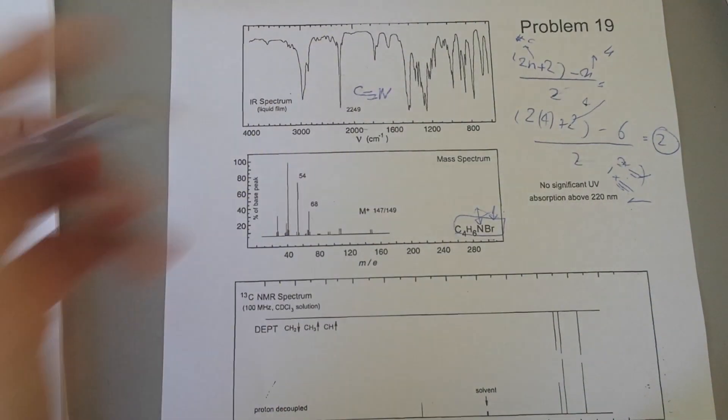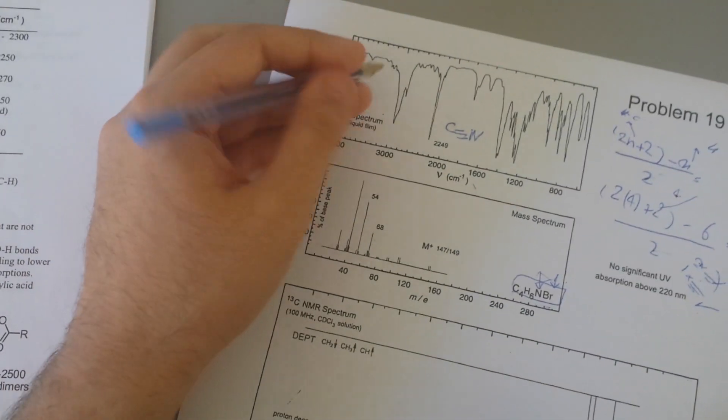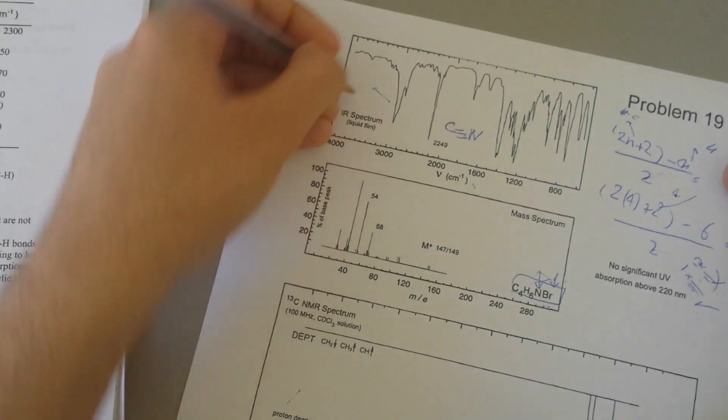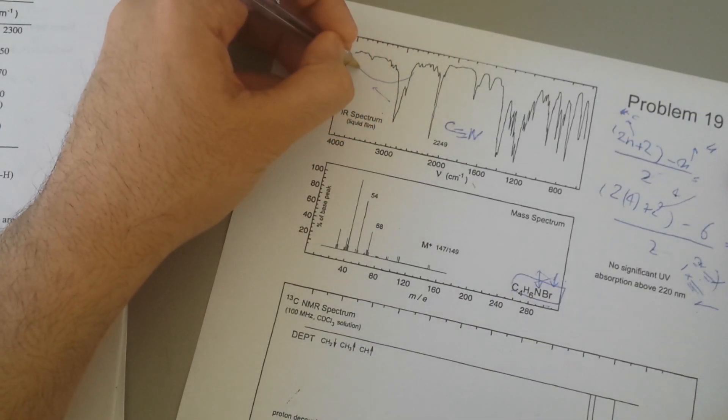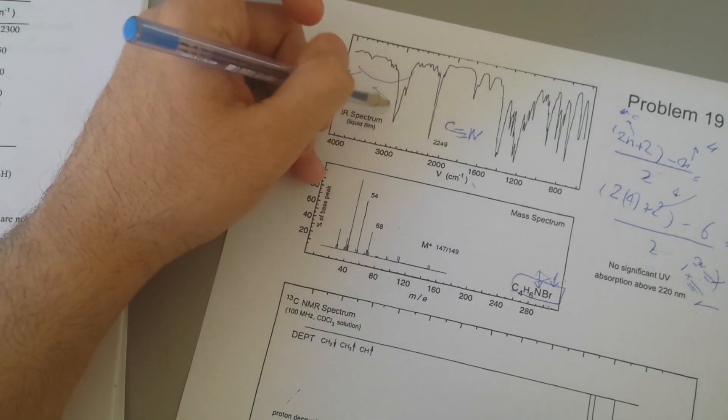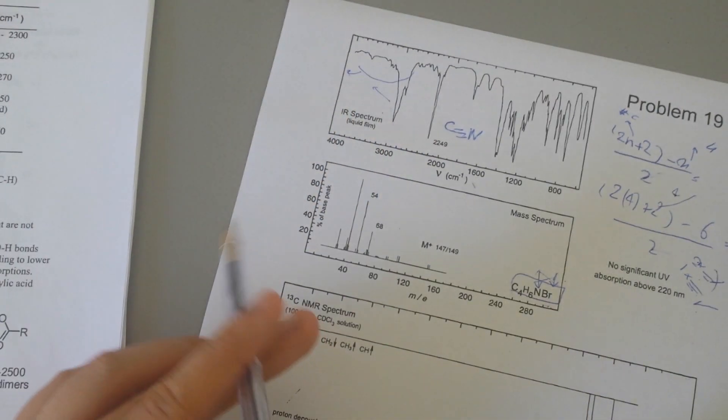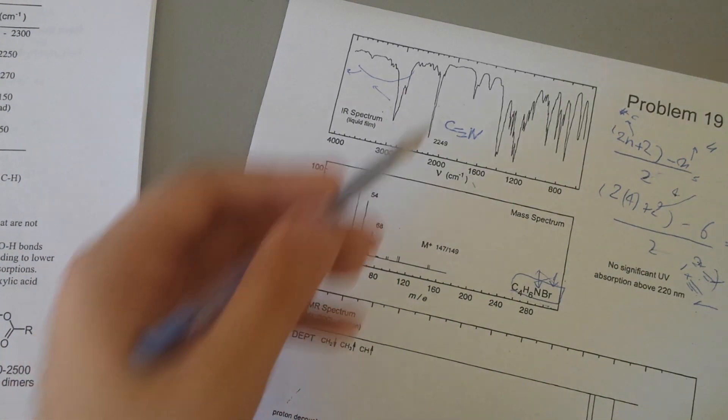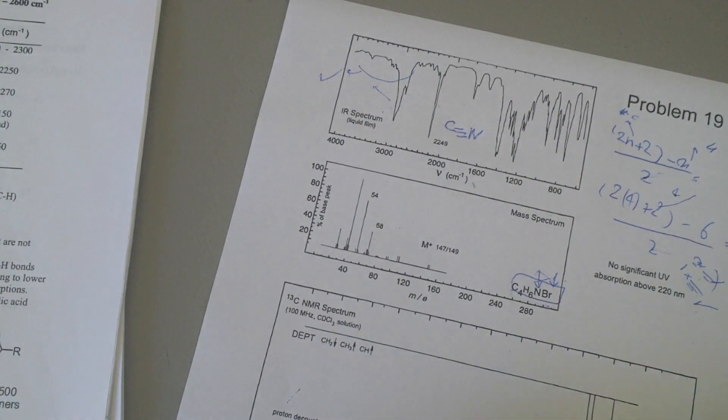And because here there is no OH or anything, there's no broad peak like that. So there is no OH and this usually doesn't tell you anything. This peak here doesn't really indicate a strong functional group that we can identify. So we know it's one CN, tick for that.